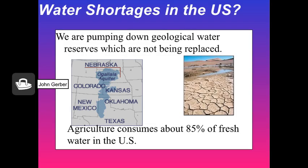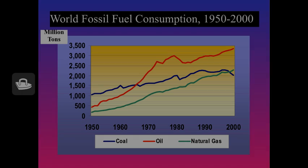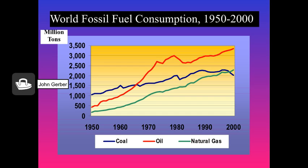Agriculture consumes about 85% of the freshwater resources in the United States — that's probably a test question. We are pumping down geological water reserves in the Ogallala Aquifer such that water wells are dropping at a rapid rate. We do this to produce cheap grain so we have cheap hamburgers.